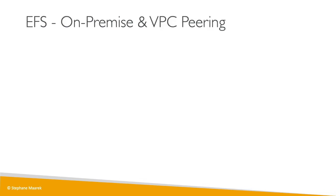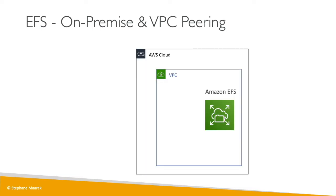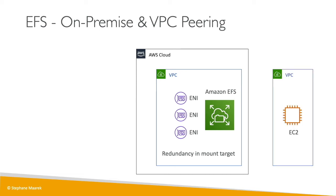Let's talk about the solution architecture around EFS. EFS works within your VPC, and we can have multiple ENIs — one ENI per AZ — to get some redundancy in the mount targets. It's also possible to have another VPC access your EFS file system through VPC peering, meaning EC2 instances in another VPC can access your EFS network file system.